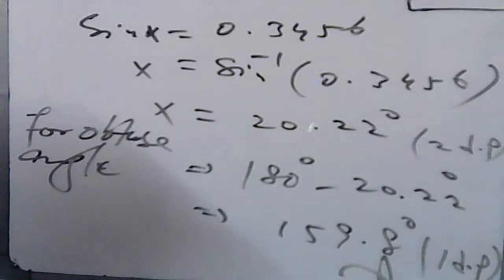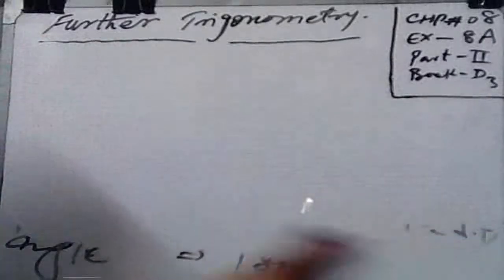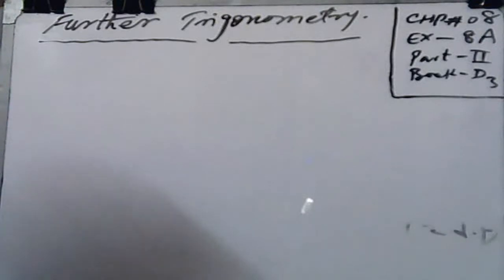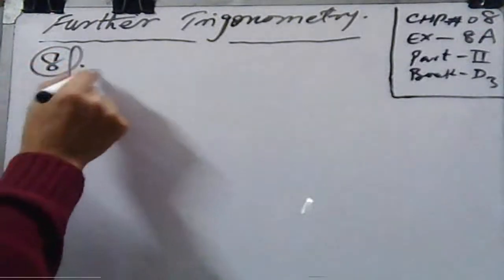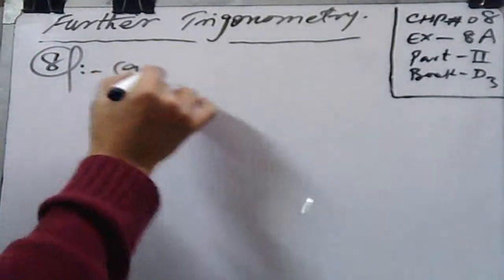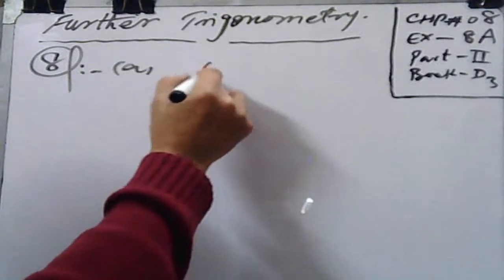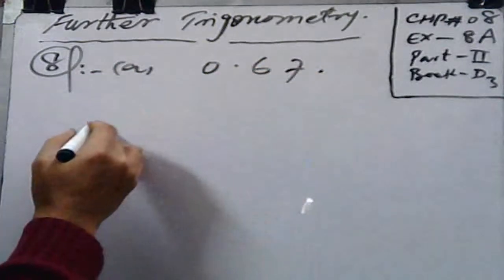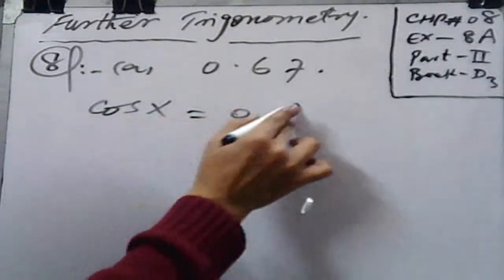Similarly, coming to question number 8: Find an acute angle whose cosine is given. In question number 7 you treated sine; now you have to treat cosine. In part a, we have to find the acute angle whose cosine is 0.67. So cos x is equal to 0.67.